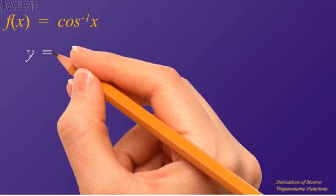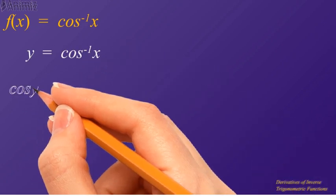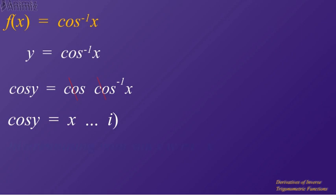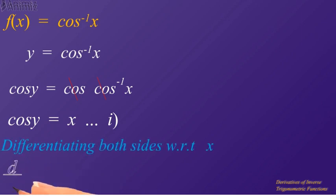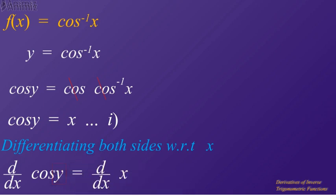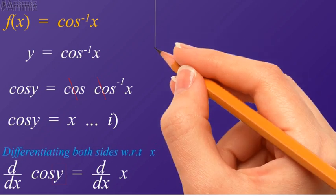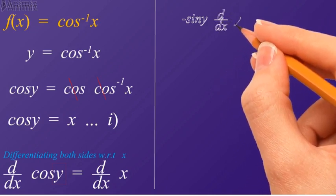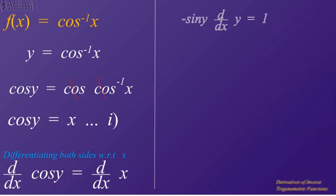Let's come to the derivative of cosine inverse x. When f(x) is equal to cosine inverse x, in place of f(x) we can write y is equal to cosine inverse x. Applying cosine on both sides of the equation, we get cosine y is equal to x. Differentiating both sides with respect to x, that is d/dx of cosine y is equal to d/dx of x. We are going to differentiate the cosine function with respect to x, but it has y as its parameter. Therefore, according to the rule of derivatives, we write the derivative of cosine function and in multiplication we write the derivative of y with respect to x. Therefore, we write minus sine y — which is the derivative of cosine — and in multiplication we write d/dx of y, which is the derivative of y with respect to x, equal to 1.